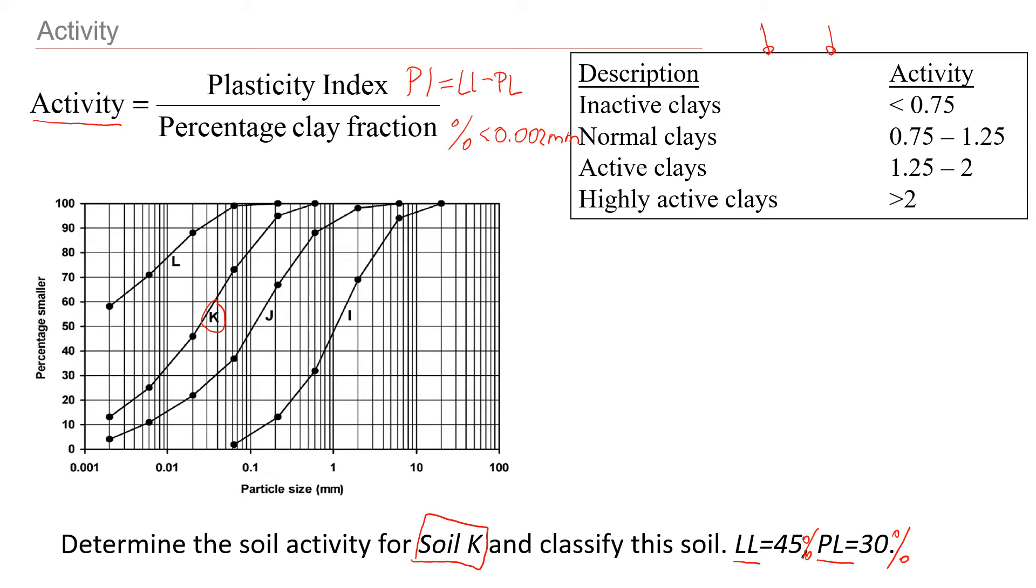The whole purpose of this activity is to see if clay is active or not. For example, sometimes we have just a little bit of clay fraction, maybe 5-10%. But this clay has very high plasticity index. In this case, you will see that the number of activity, you're going to have very high numbers, like probably in this range.